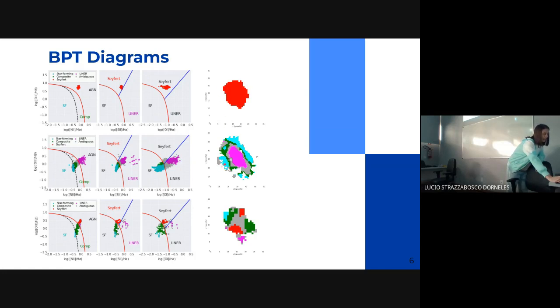In the second one, most of the central spaxels fall into the LINER region. So I classify this AGN as LINER. In the third one, the central spaxels are all ambiguous. So I define the AGN as ambiguous because you cannot determine whether it's Seyfert, LINER, or star formation.